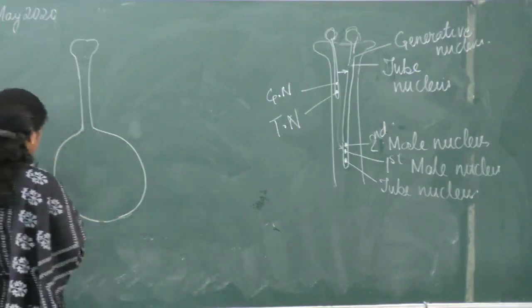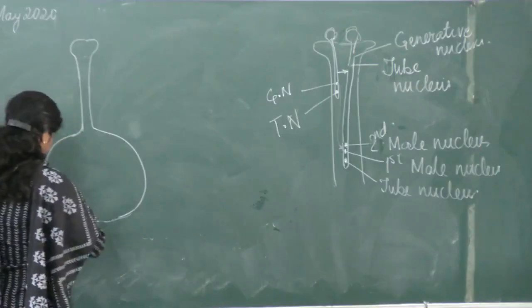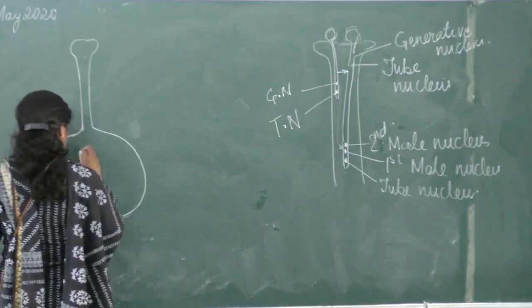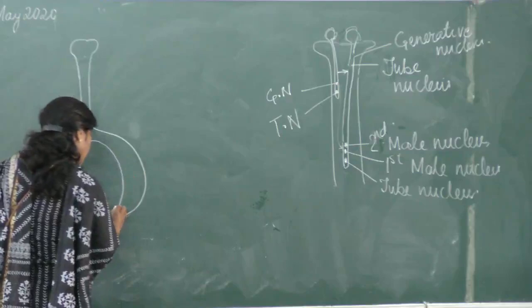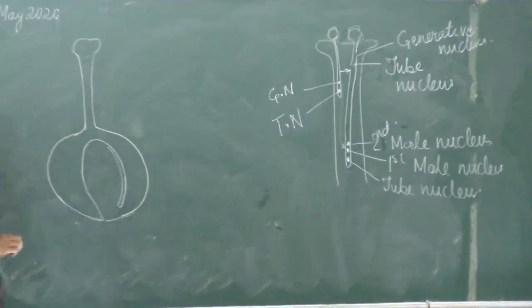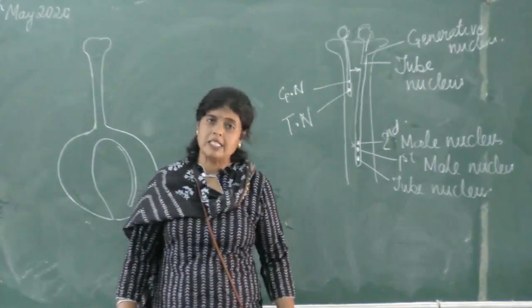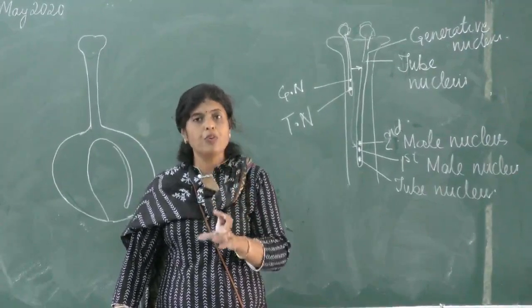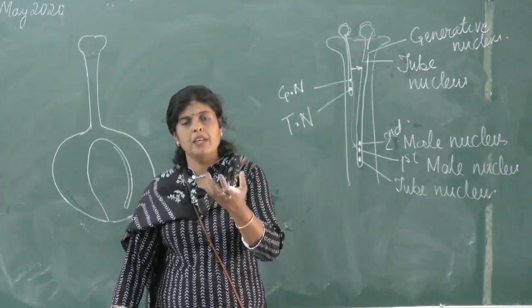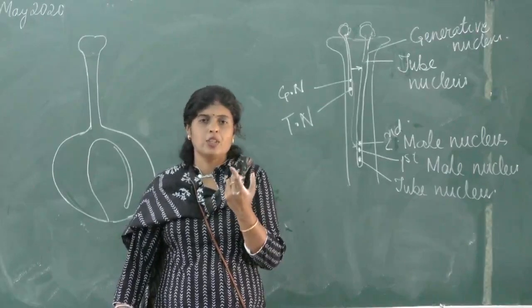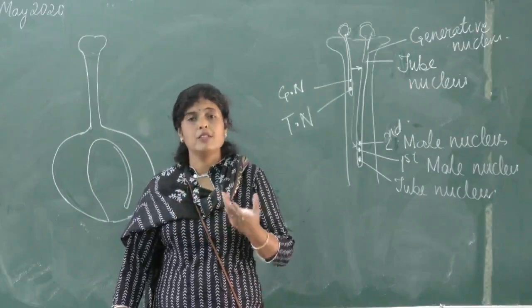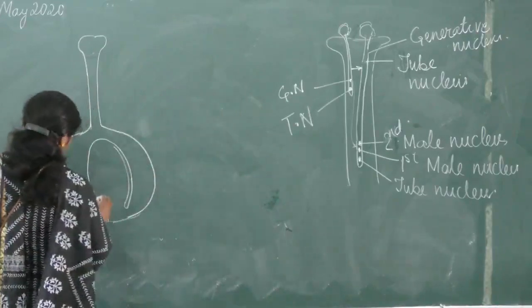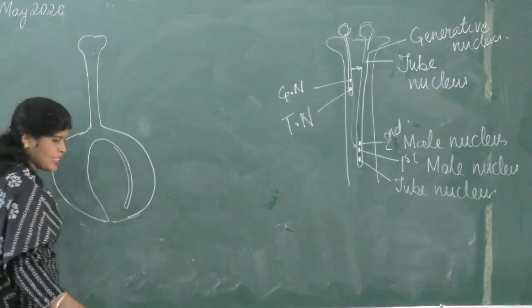Inside the ovary is present the ovule. The ovule is attached by a stalk, and the number of ovules can vary from one to numerous. In mango there is only one ovule; tomato, chili, and pea have numerous ovules. The ovule finally forms the seed.